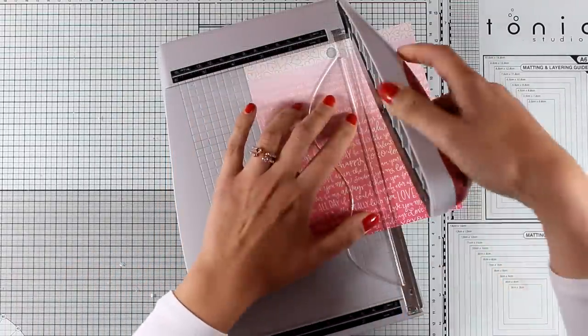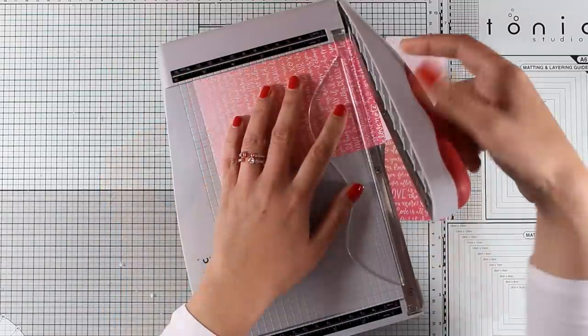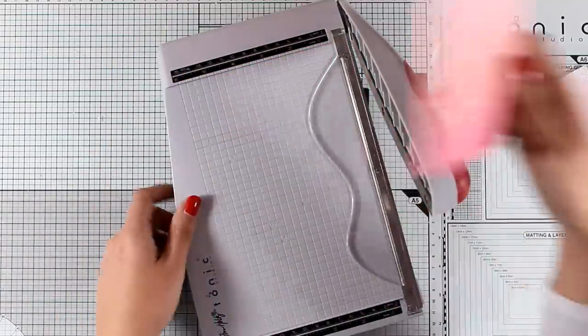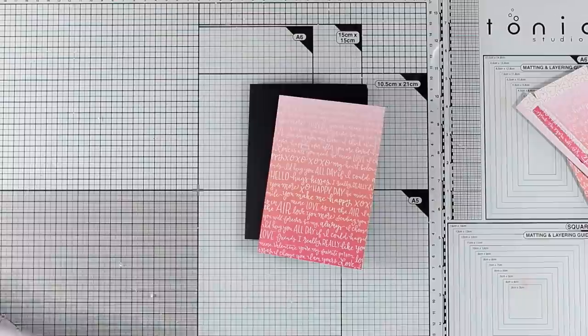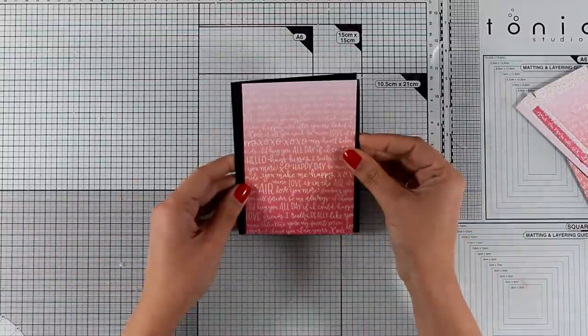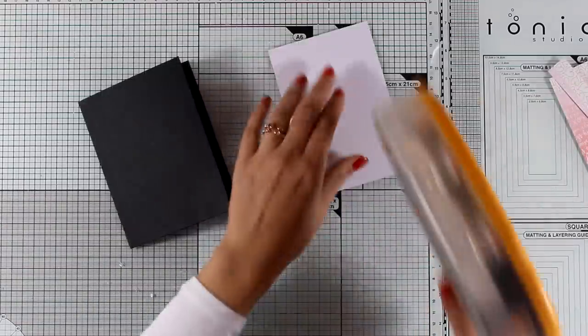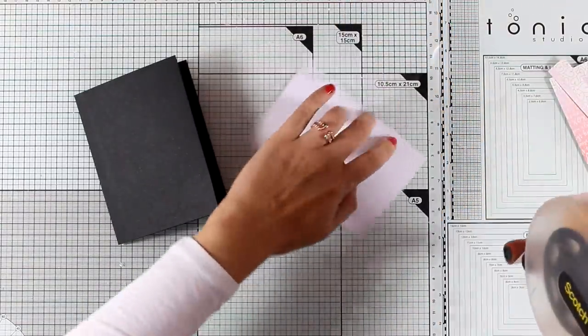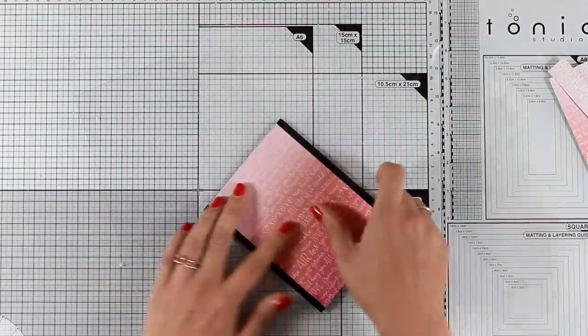And I am also going to create a panel out of my favorite pattern paper from the ones included, this is the one with the ombre look, and I am going to keep the length, so this is going to be 5 1⁄2 in length, but I want it to be narrower, so when I place it on top of my card, I will end up having two black strips on each side.